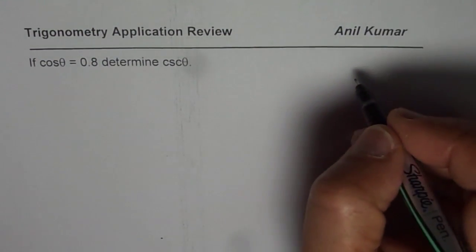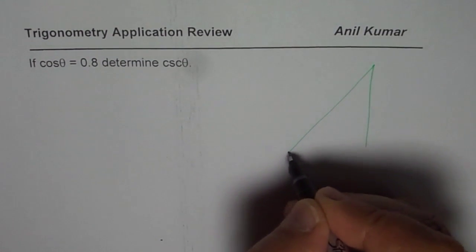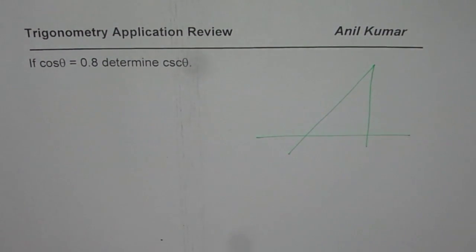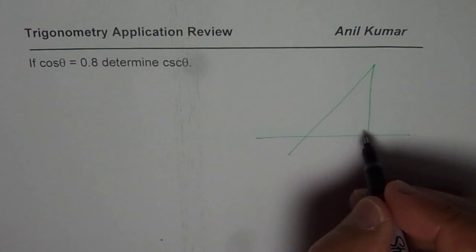Now whenever we have to find relation between different trigonometric ratios, it is good to make a right triangle and then see what the relation is.